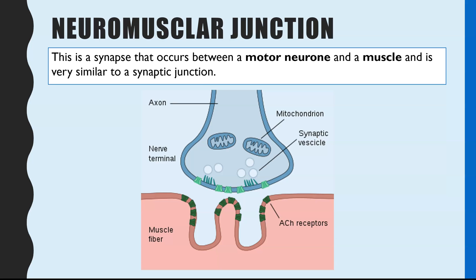Neuromuscular junctions are slightly different from what we were just looking at. It's still a synapse because it is a gap; however, it's not a gap between two neurons. You find it at the end of your reflex arc: stimulus detected by receptors, linking to the sensory neuron, then the coordinator with the relay neuron, then finally the motor neuron and the effector. In a neuromuscular junction, the neuron is the motor neuron and it's the gap between that and the muscle — so it's neuron to muscle rather than neuron to neuron.